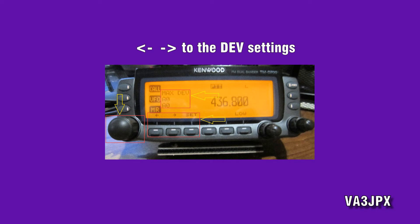Step number four: press and hold down the PTT. Yes, the radio will be transmitting, so make sure there's an antenna plugged into it or at least a dummy load. While you're holding down the PTT, you're going to turn the channel selector, and that's going to start changing the deviation value. Put it to something a little bit higher.